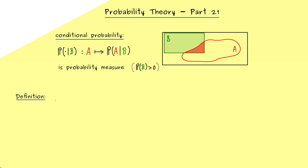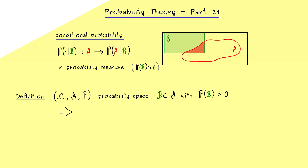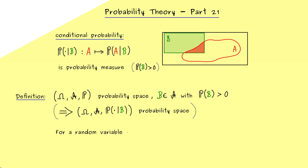That is the whole idea of the conditional expectation. If we look at examples you will immediately understand what we do here, but first we should write down the formal definition. As always we start with a probability space and now we take an event B from the sigma-algebra A. The only condition we need is that the probability of B is non-zero. Therefore we immediately get a new probability space — we take the same ingredients and only change the probability measure. A random variable X will always live on both probability spaces, because by definition the random variable only needs the sample space and the sigma-algebra.